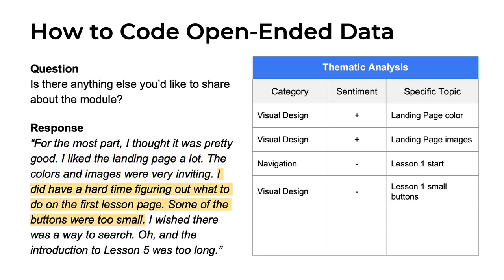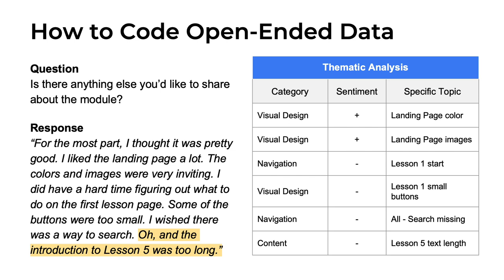Continuing on, the next two sentences read: 'I did have a hard time figuring out what to do on the first lesson page. Some of the buttons were too small.' Having a hard time figuring out what to do sounds like a navigation problem, so I'll add a new row labeled 'navigation' with a negative sentiment — a minus symbol. The buttons being too small could go under visual design or navigation, but I'll put it under visual design as a negative comment. Then the participant wrote 'I wish there was a way to search,' which is related to navigation — negative sentiment. And for the last sentence, 'The introduction to lesson five was too long,' this seems related to the content of my instruction, so I'll create a new row with 'content' as the category and negative as the sentiment.